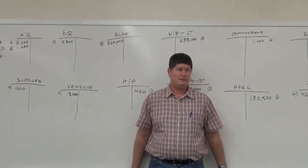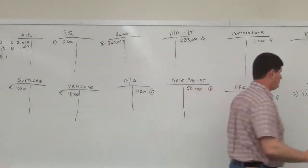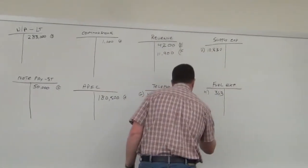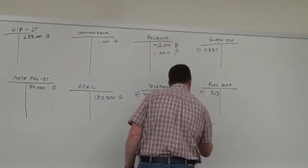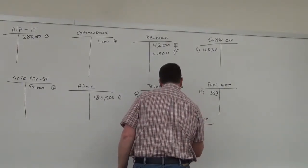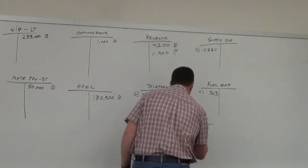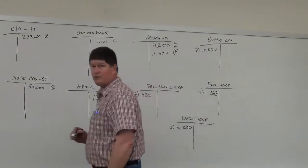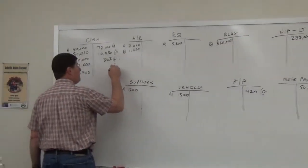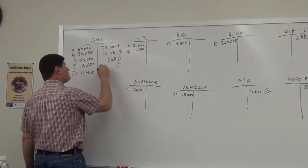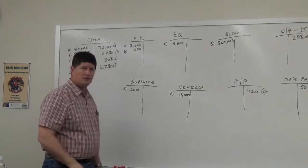Item I: Paid $6,280 in wages to employees who worked in March. Wages expense increases as a debit for $6,280. We paid them in cash, so cash decreases as a credit for $6,280.